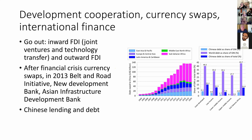Alongside that, China has embarked on the strategy of 'going out,' which in part involves a different use of its foreign exchange reserves. It has been involved in inward FDI but also significantly in outward FDI from 1999. After the financial crisis, it has been involved in currency swaps, particularly in East Asia. In 2013, it established the Belt and Road Initiative, the New Development Bank, the Asian Infrastructure Investment Bank, and has engaged in significant international lending — with charts depicting the growth of Chinese lending to different parts of the world.